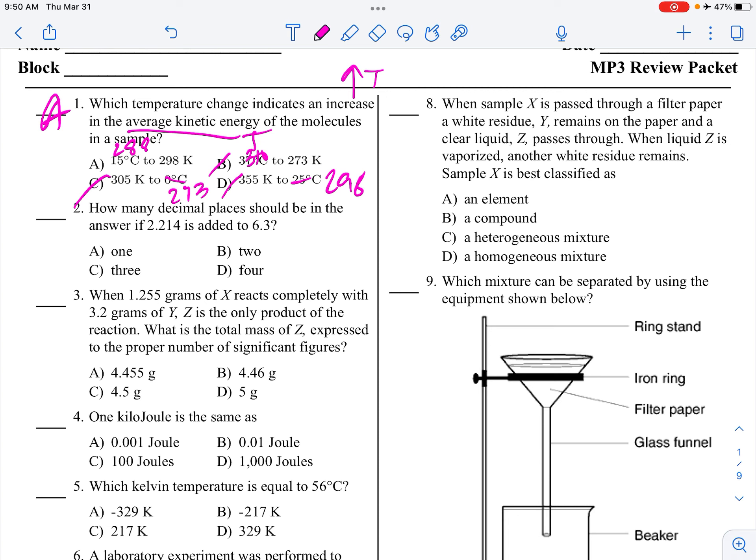How many decimal places should be in the answer if 2.214 is added to 6.3? So the rule with addition and subtraction is the fewest number of total decimal places. So this has three decimal places, this is one. So it's not asking for the answer, it's just saying how many should be in the answer, and it is one.